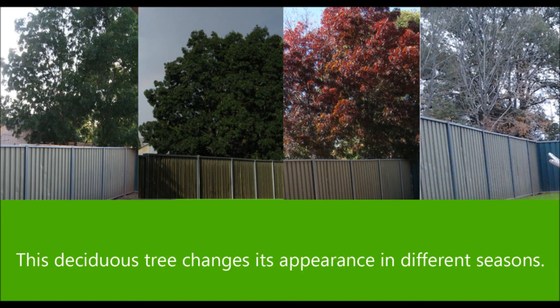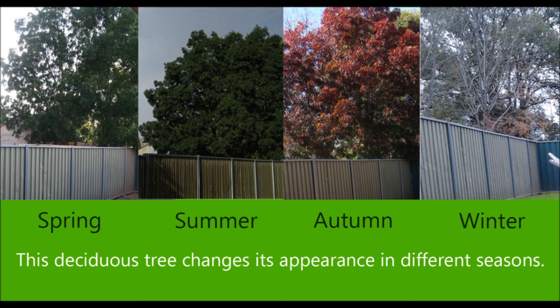Some deciduous trees change their appearance in different seasons. For example, the great oak will turn bright colors of orange, yellow, and brown during autumn, and further into winter will lose its leaves.